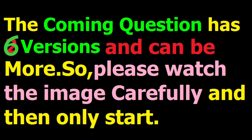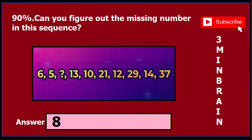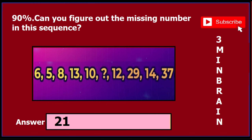The coming question has got 6 versions, or can be more than that also. So please watch the image very carefully, because the question mark may be in a different position. For instance, in version 1 of this question, if you find this sort of image in which the question mark is in the 3rd position, then your answer is 8. Similarly, in version 2 of this question, if you find this sort of image in which the question mark is just at the 6th position, then your answer is 21.